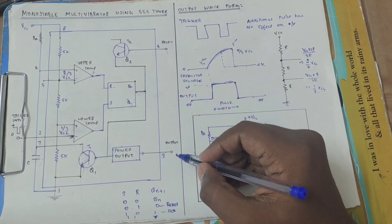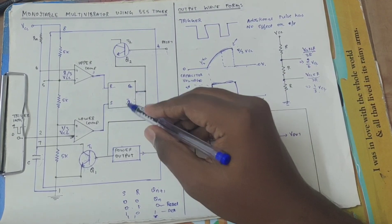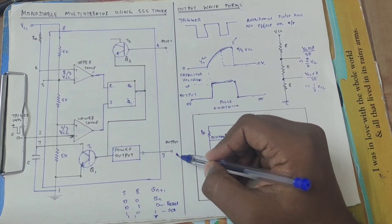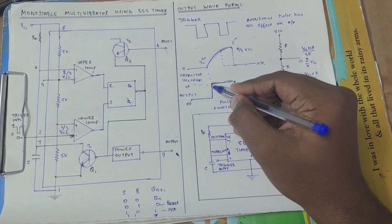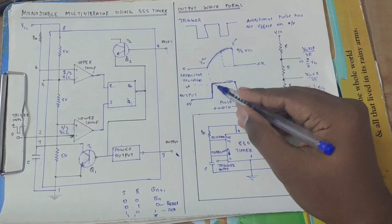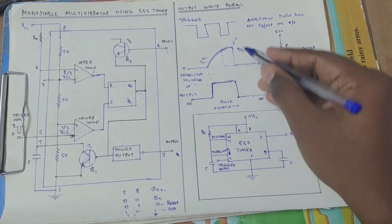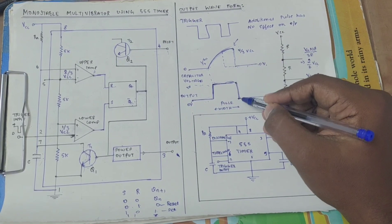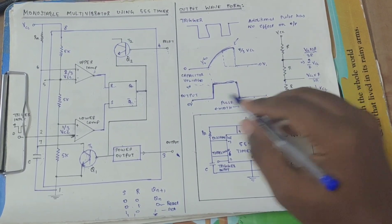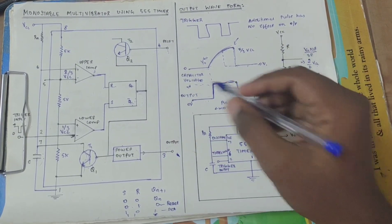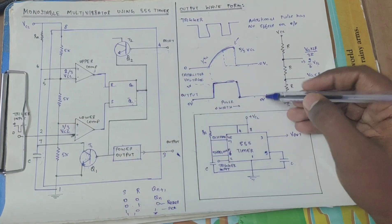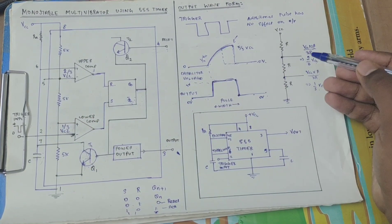If you look at the output waveform, you can see: here is 0, and this is 1. This is the charge. This is the constant. Reset press gives 0. This is the cycle. This is the trigger input, and this is the next trigger input — so this is continuous.